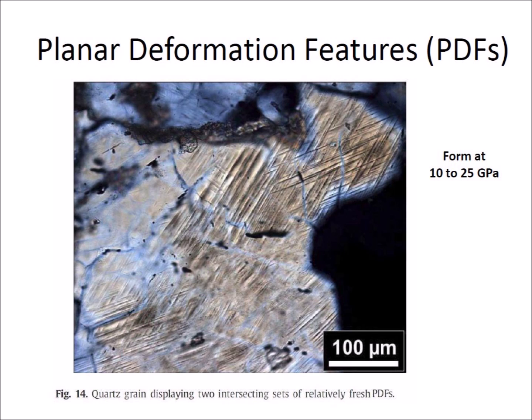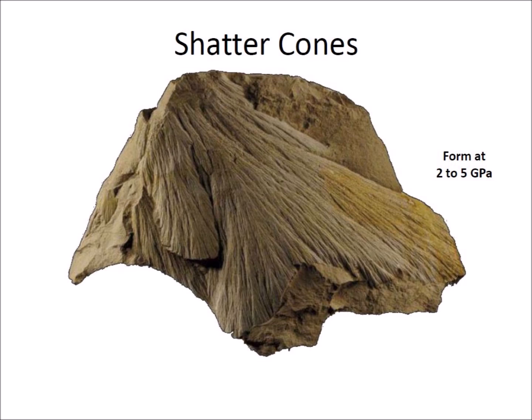Planar deformation features, or PDFs, are formed in quartz crystals at pressures from 10 to 25 gigapascals. They appear as narrow planes of glassy material arranged in parallel sets that have distinct orientations with respect to the grain's crystal structure. A shatter cone is a striated conical structure produced in rock by intense mechanical shock, such as that associated with a meteorite impact. Shatter cones are produced at pressures from 2 to 5 gigapascals.